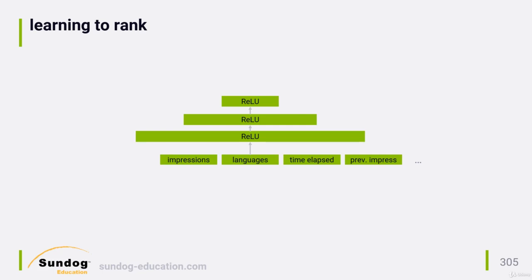The language of the user and the language of the video are also embedded into another feature set. They also look at the time elapsed since the user last watched a video on this topic, and the number of previous impressions this user had, which is used as a training feature in several different ways. They take the square root of this value, the square of it, and the value itself all as separate input features. This allows the system to discover super- and sub-linear functions, which is a neat trick. Everything is normalized before being fed into the neural network to make all of these features have equal initial weight.